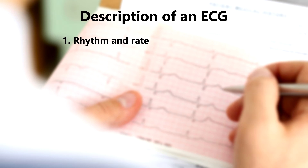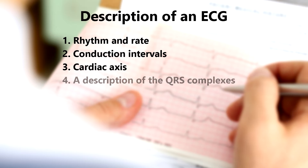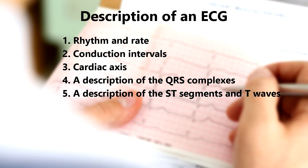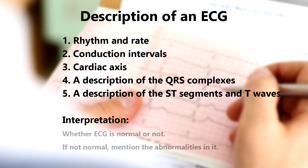An ECG should be reported in this sequence: 1. Rhythm and rate. 2. Conduction intervals. 3. Cardiac axis. 4. A description of the QRS complexes. 5. A description of the ST segments and T waves. After these five points, you will write down the interpretation, mentioning whether the ECG is normal or not. If it is not normal, you will also mention the abnormalities present in it.